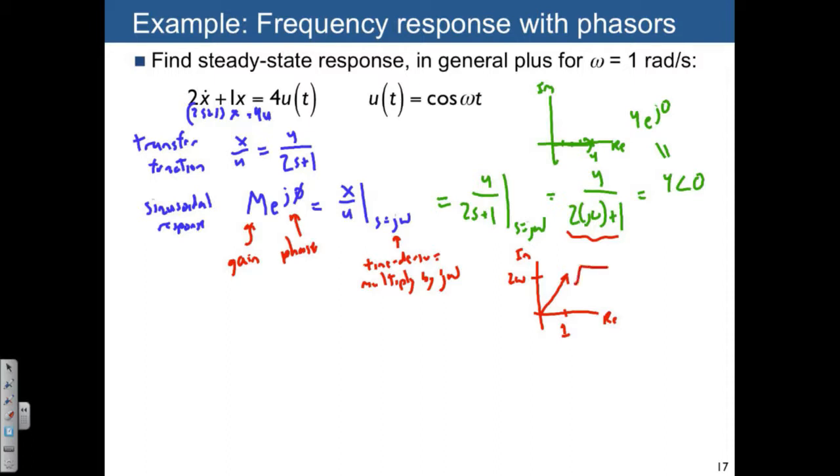We can talk about the magnitude of this number. This is just going to be √(1² + (2ω)²), and the angle is arctan(2ω/1). So we can also write this as 4∠0 divided by √(1² + (2ω)²) angle arctan(2ω).